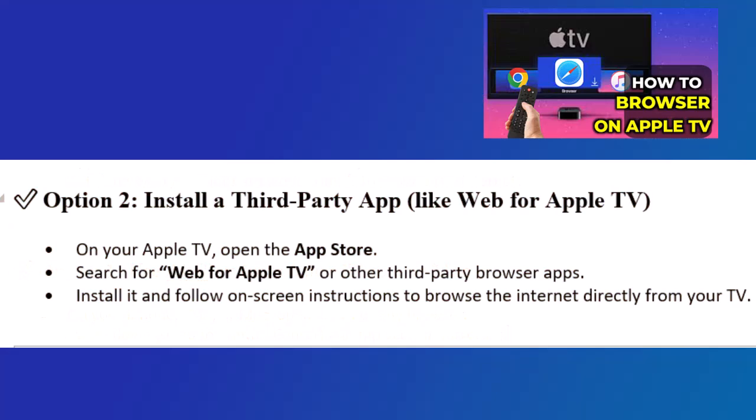Option 2: install a third-party app like Web for Apple TV. On your Apple TV, open the App Store. Search for Web for Apple TV or other third-party browser apps. Install it and follow the on-screen instructions to browse the internet directly from your TV.